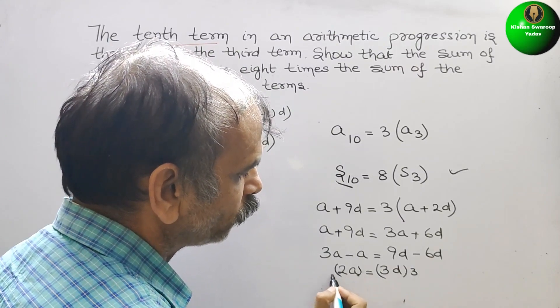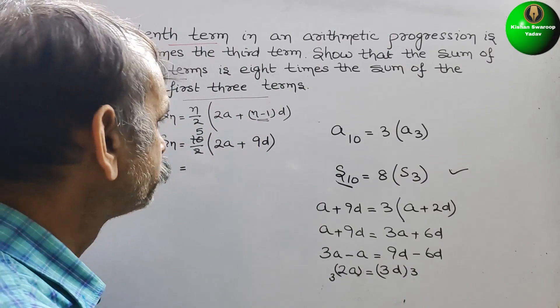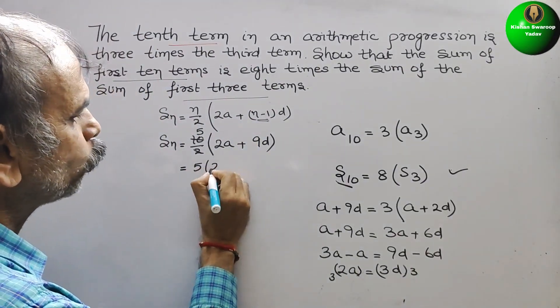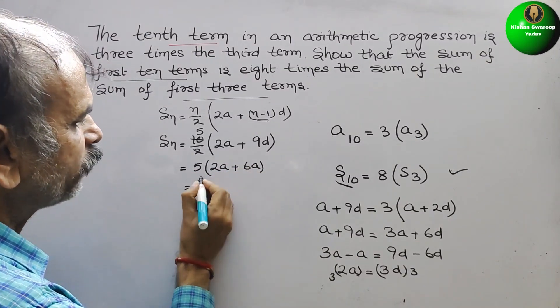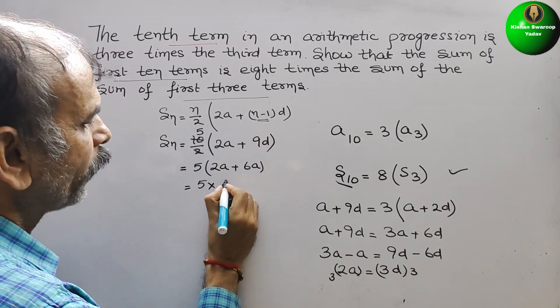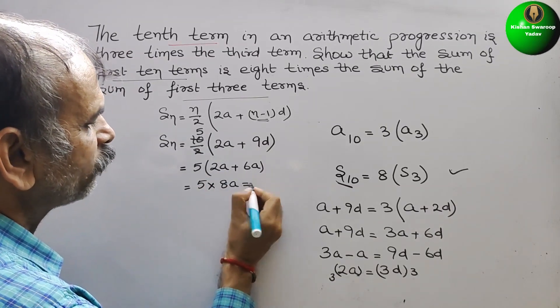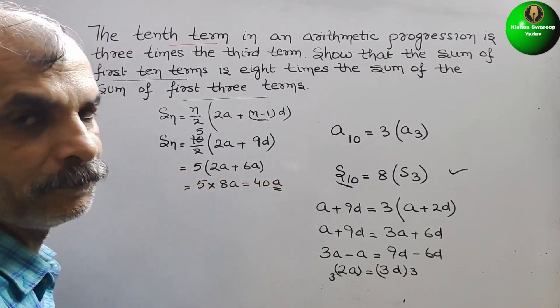So now it will be 5 into 2A plus 6A. So S10 is equal to 8A. So S10 is 40A.